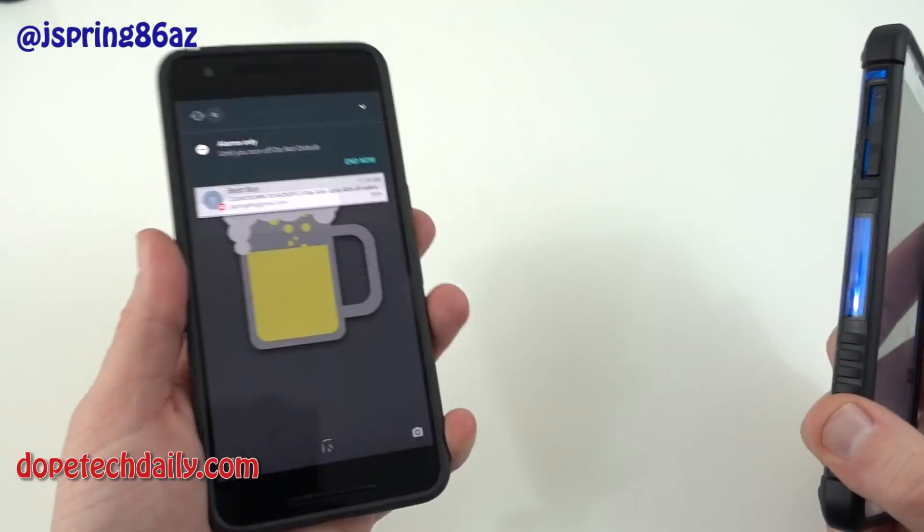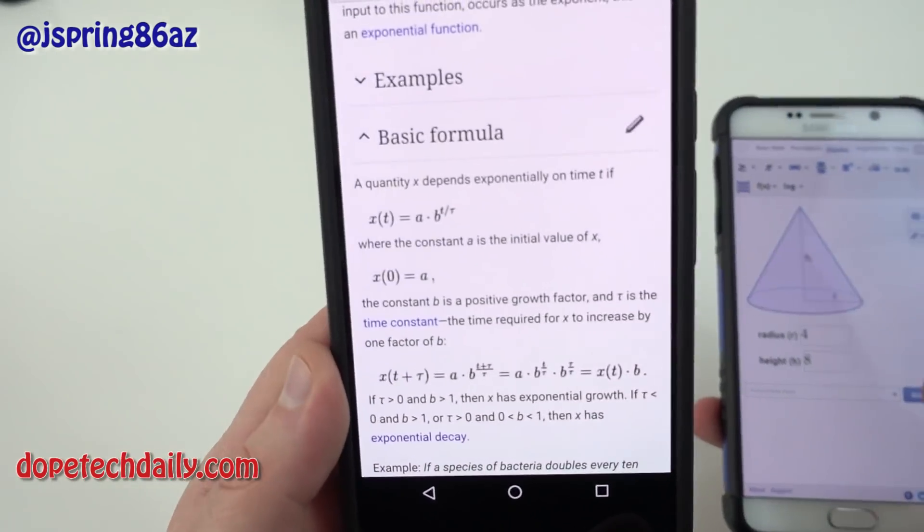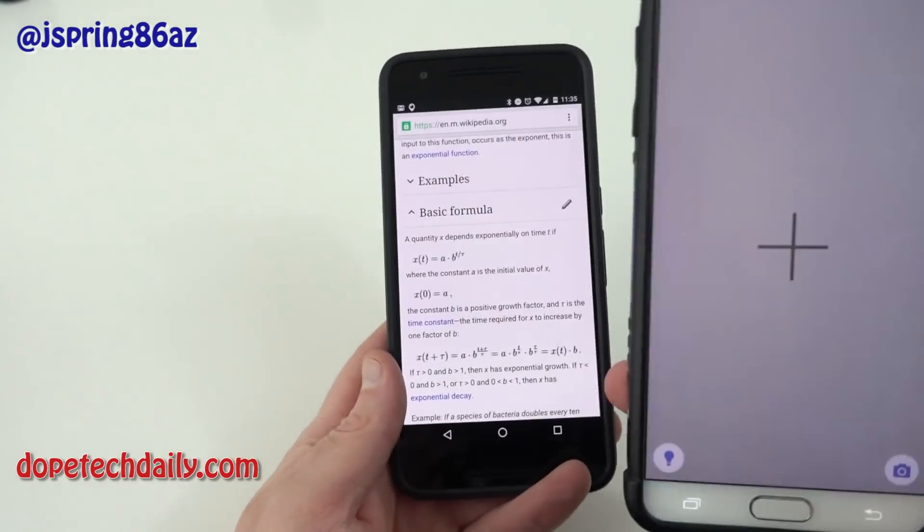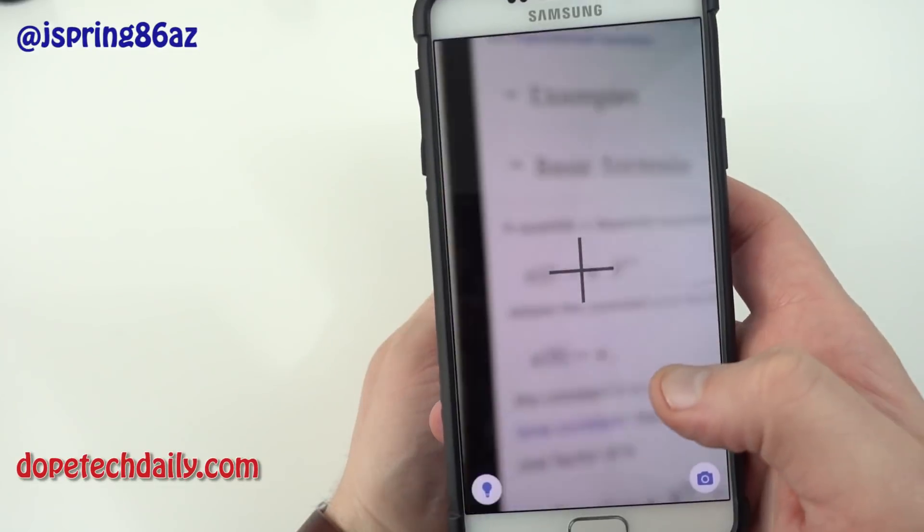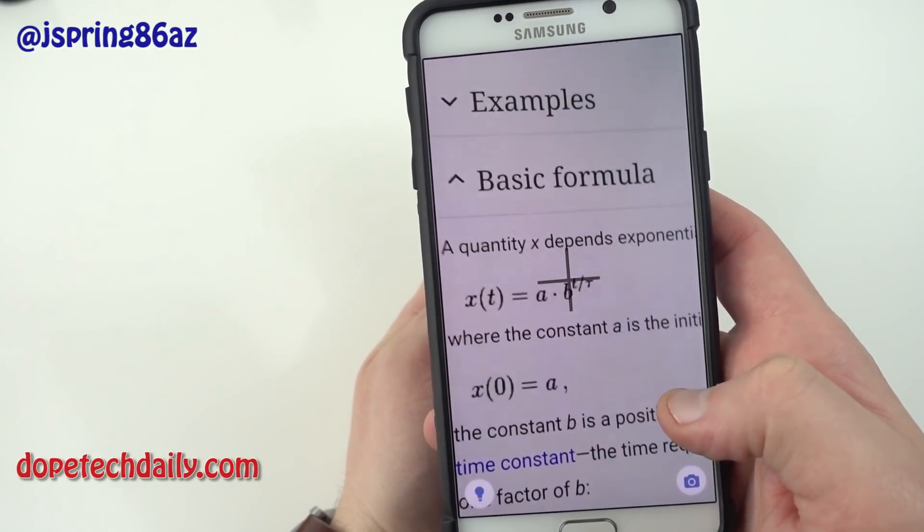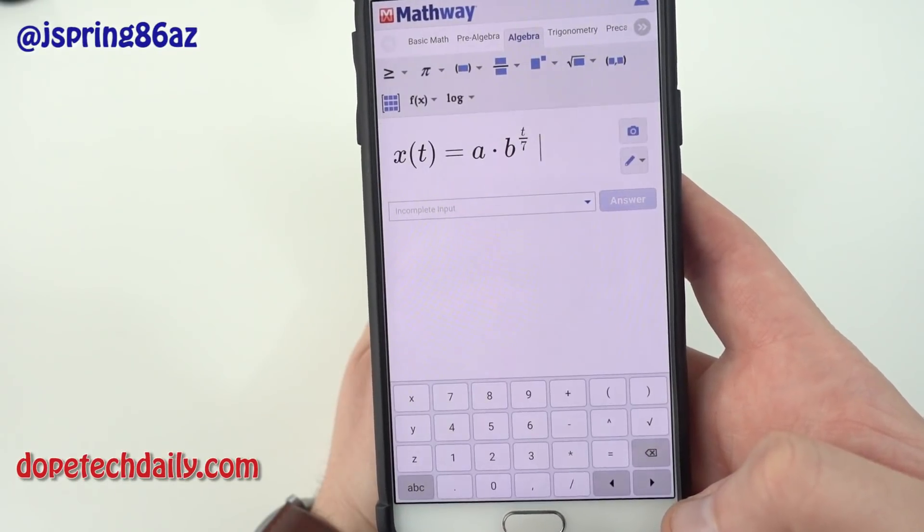I pulled up some math on Wikipedia on my Nexus 6P here. So you can see I've got a formula there. And say I want to import that into Mathway on my Note 5. All I need to do is just align the camera here with the formula. Say X of T is A times B T to the R T over R. X of T is A.